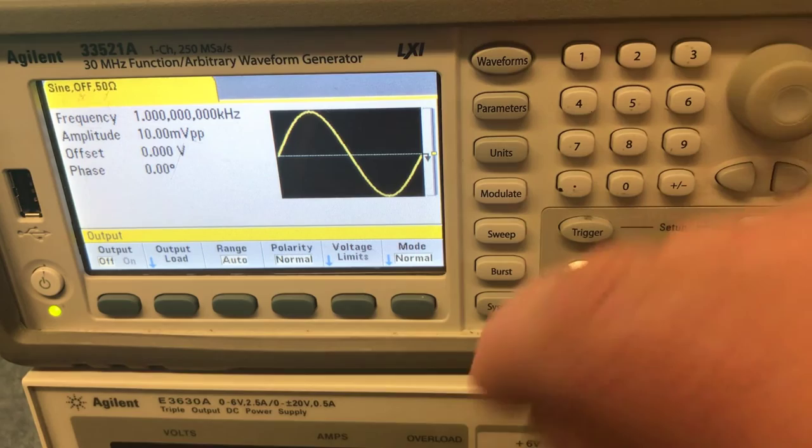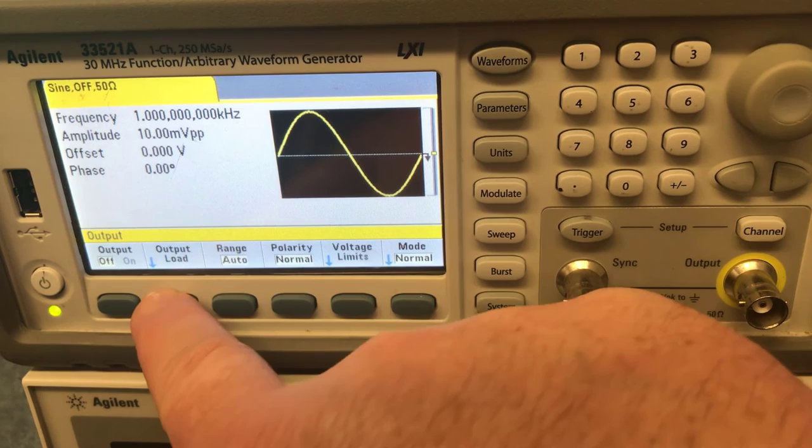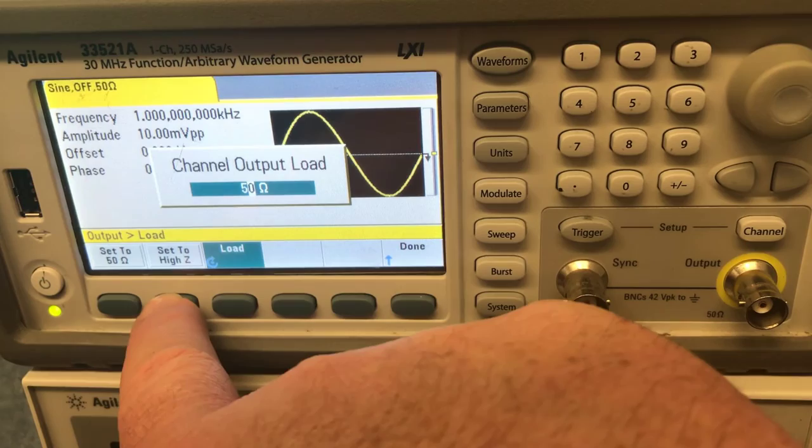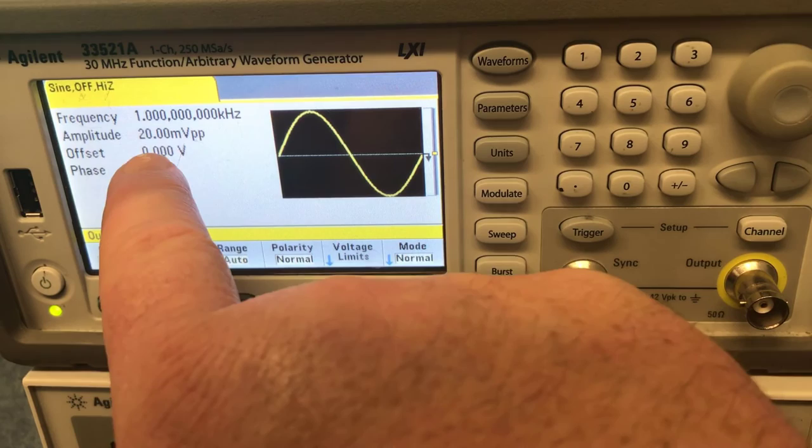So I'm going to go under channel, and then you want to choose the output load and choose that set to high Z. So set to high impedance. That means that we're going to actually get the voltage that's actually being listed there.